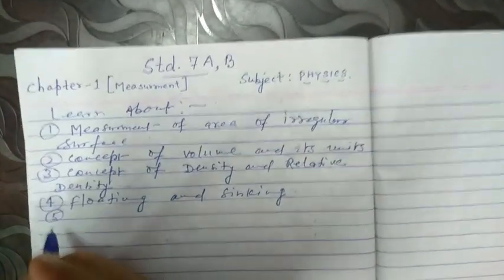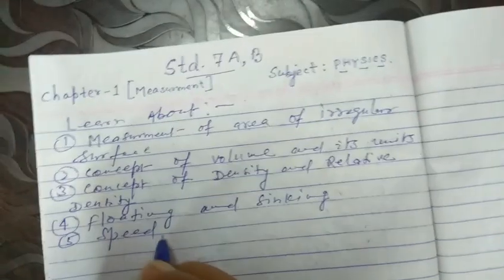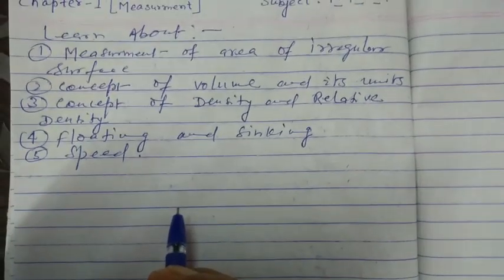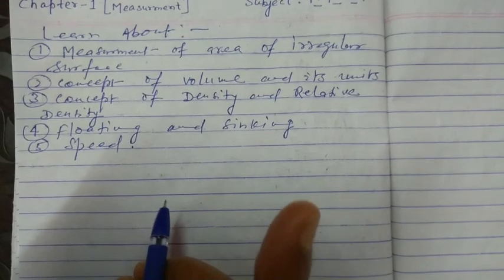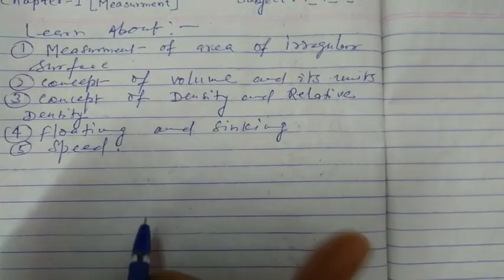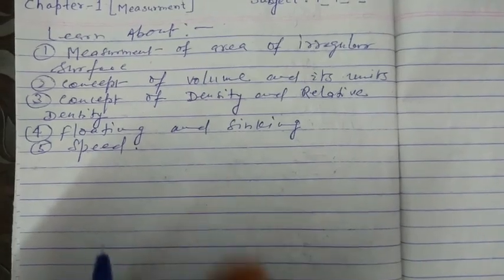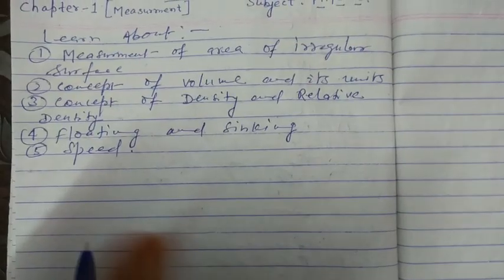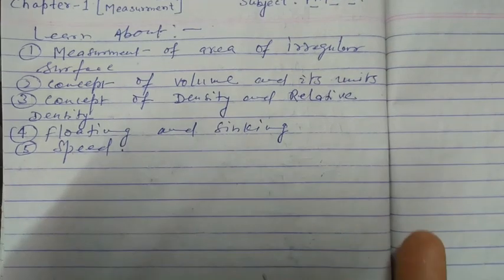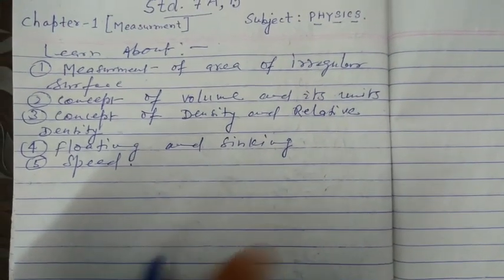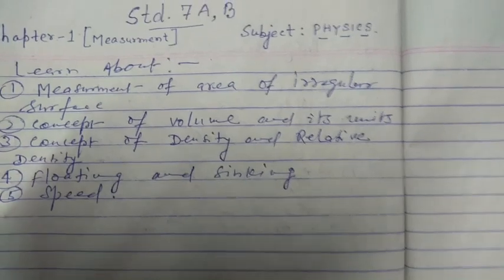Number 5, speed. In measurement, in daily life, we come across measurement of many quantities such as length, area, volume, speed, velocity, density, etc. You have studied earlier that measurement is necessary for uniformity in our daily life.